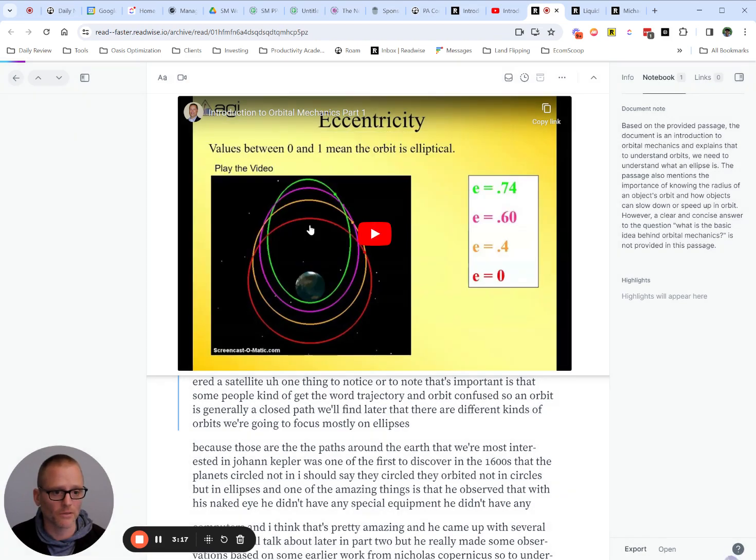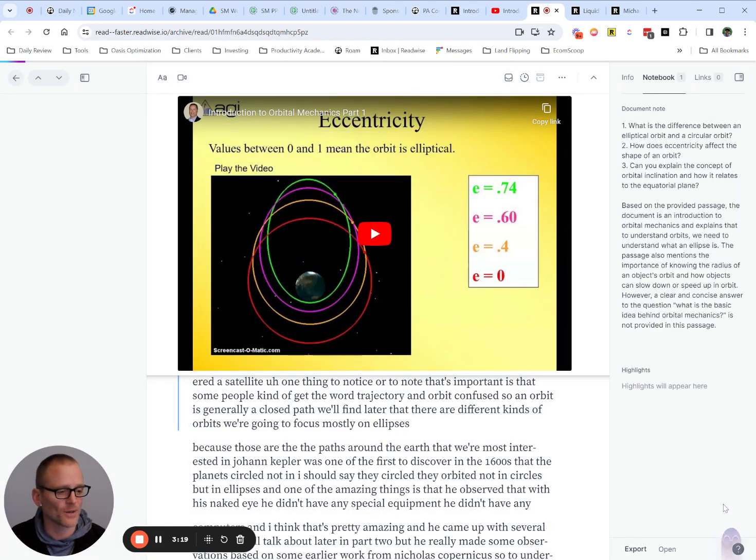Let's generate some thought-provoking questions. We see it again working. And here we go. What is the difference between an elliptical orbit and a circular orbit? Definitely good to know. How does eccentricity affect the shape of an orbit? That's good to know. If you're learning about orbital mechanics, that's certainly important. And can you explain the concept of orbital inclination and how that relates to the equatorial plane? Also important to understand how that's all related. So pretty cool stuff right there.